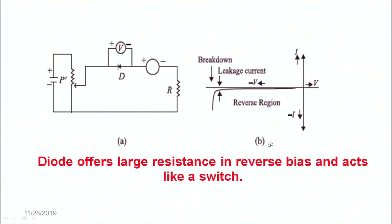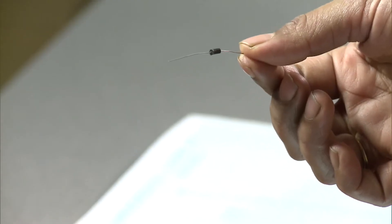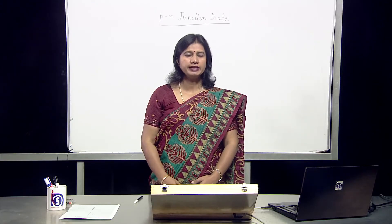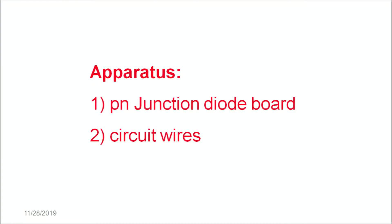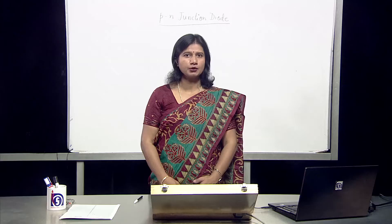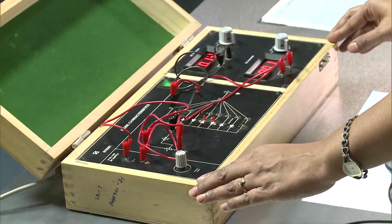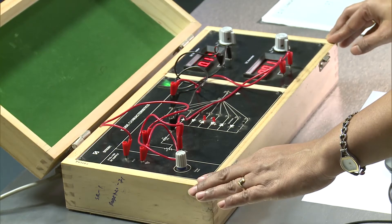In order to understand the characteristics in detail, let's do a simple experiment showing the diode in forward and reverse bias. This is a PN junction diode. We are going to use this diode in this circuit. To start the experiment we need a PN junction diode board and circuit wires. This is the setup where we have different kinds of diodes connected.